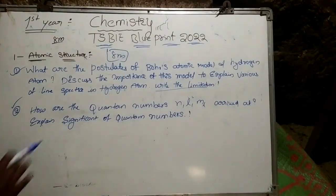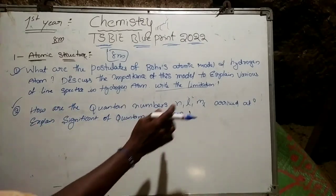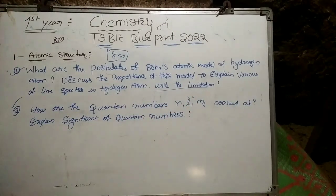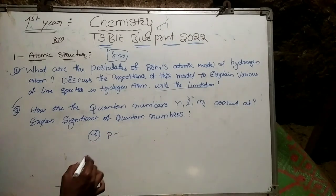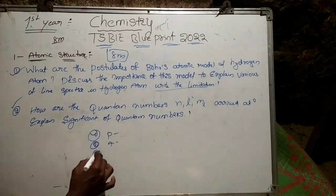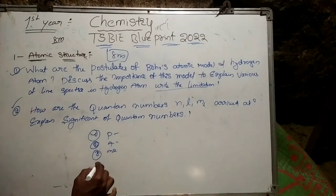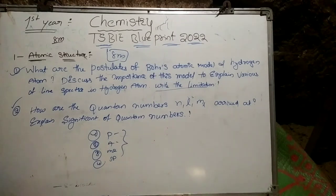The second question is: how are the quantum numbers N, L, M, and S arrived at? Explain the significance of quantum numbers. We have four quantum numbers: one is the principal quantum number, two is the azimuthal quantum number, three is the magnetic quantum number, and four is the spin quantum number. We have to discuss the significance of each.